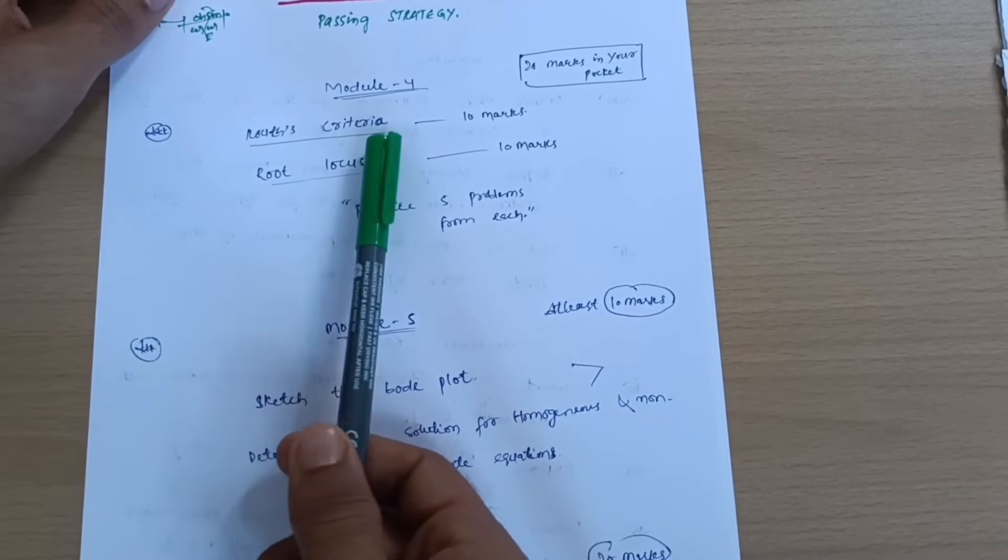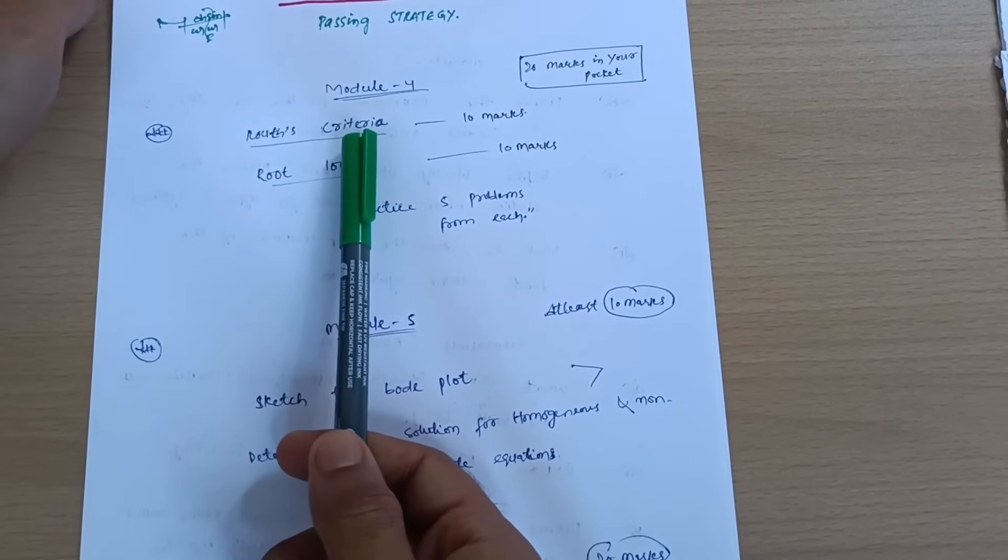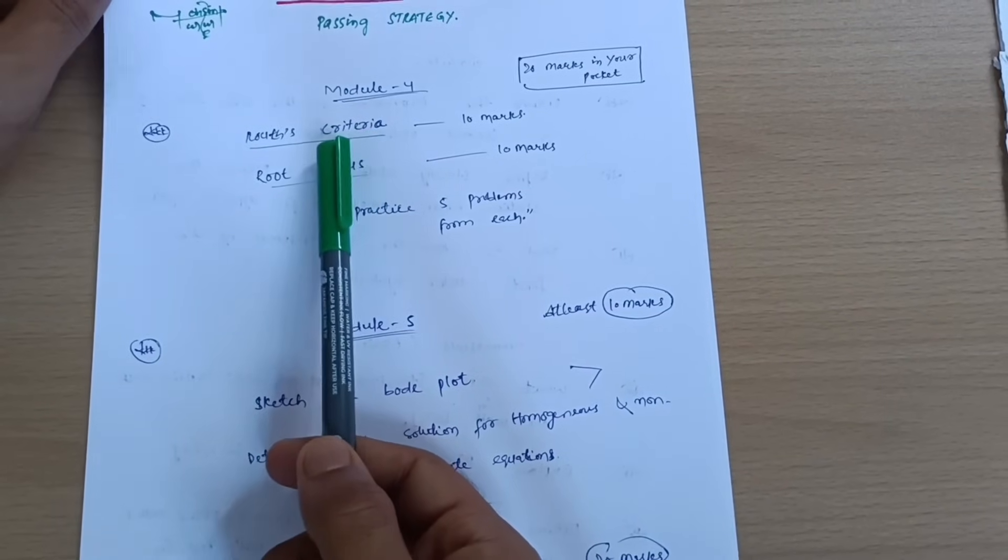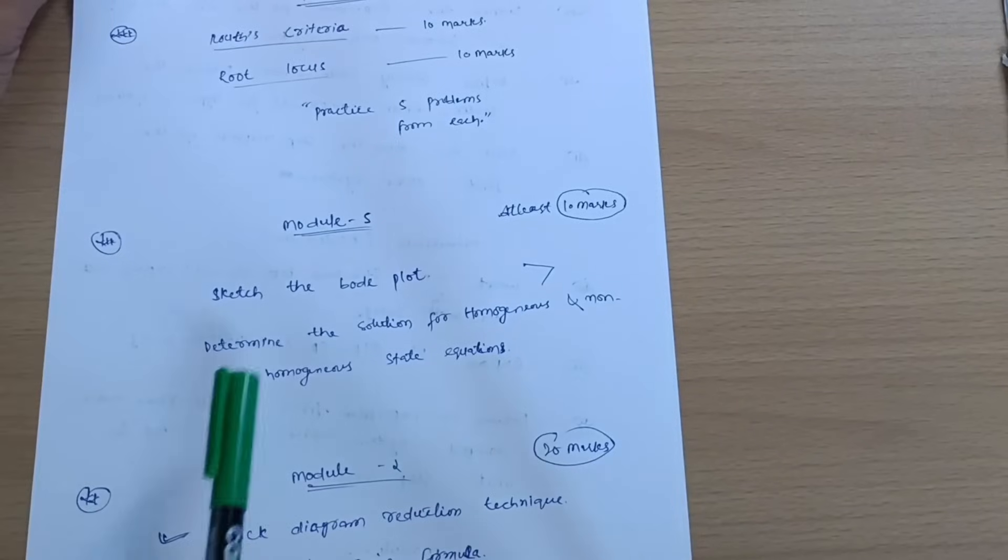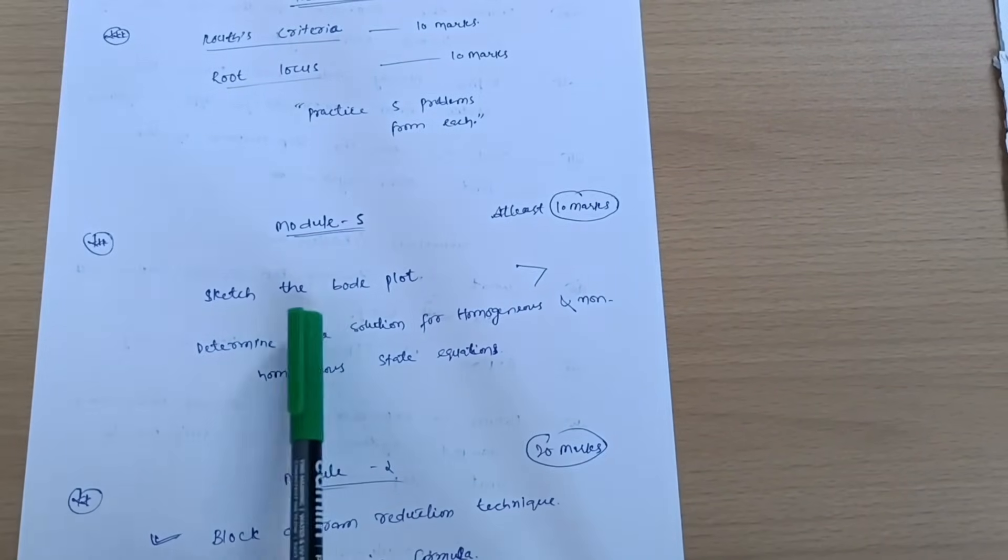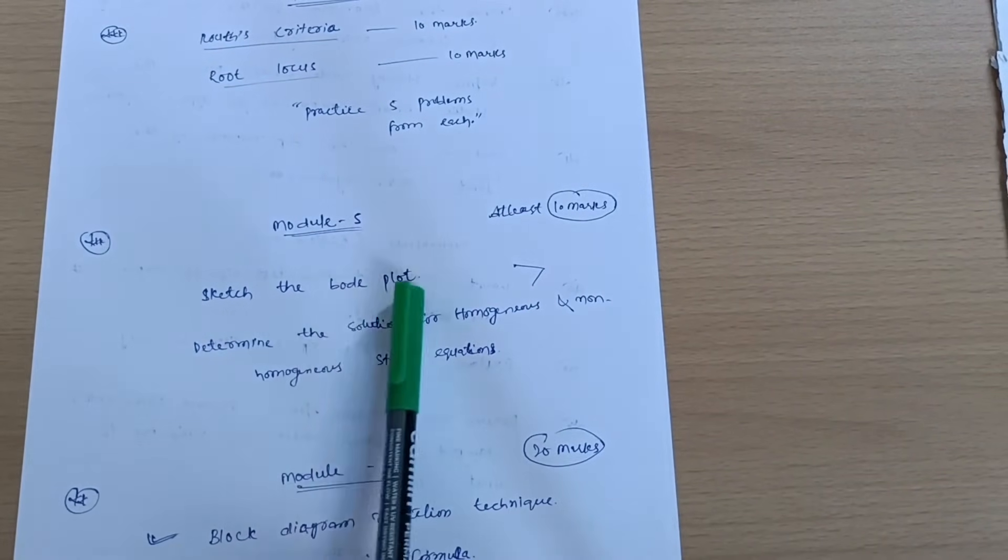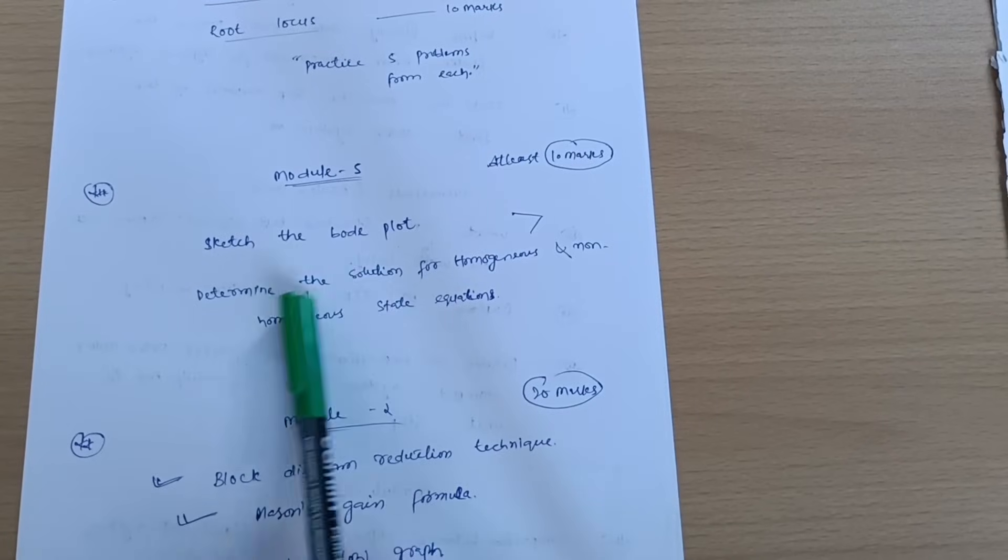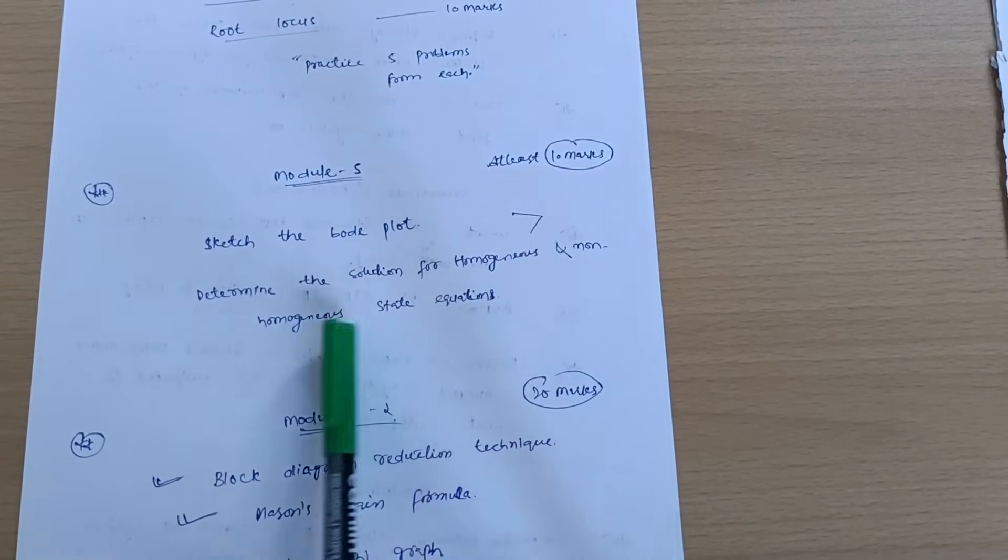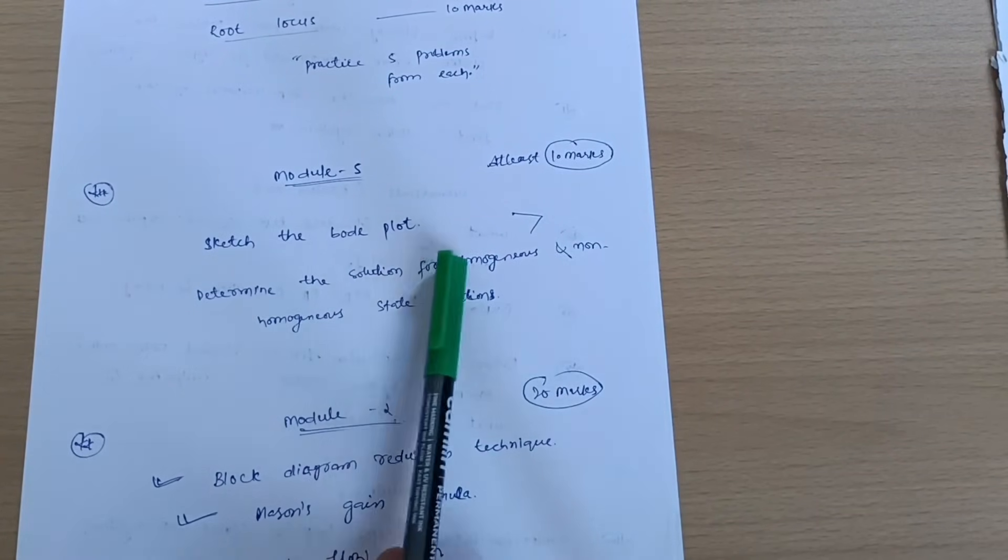Routes criteria is also a simpler one. If I will get time, I will also solve problems on Routes criteria. Next is Module 5 where you have to go for the Bode plot. Again, simple numericals are there. Determine the solution for homogeneous and non-homogeneous state equations. There is actually Polar plot, Nyquist plot, but Bode plot is somehow simpler than Nyquist or Polar plot.